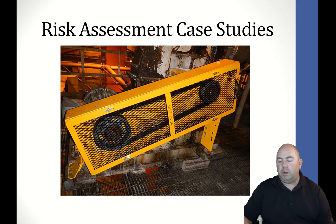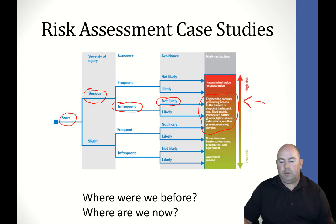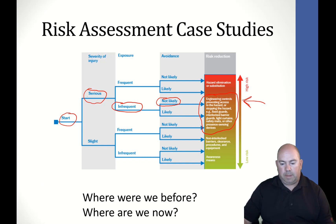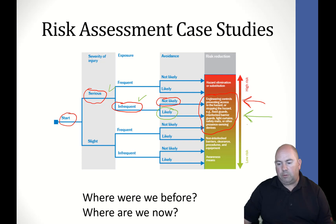This is typically the way this would be done. Let's evaluate the residual risk after adding guarding. Everything is still going to be the same — it's still a serious injury, still infrequent — but your chance of avoiding this now is going to be likely because that area is completely guarded. So we did bring it down a little bit, and for the serious injury, that's about as good as we can do.